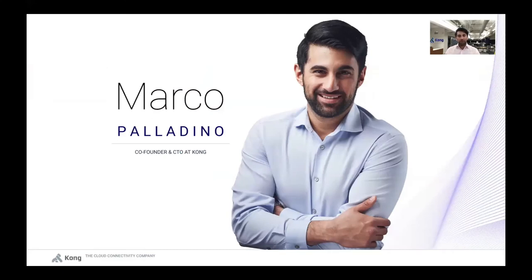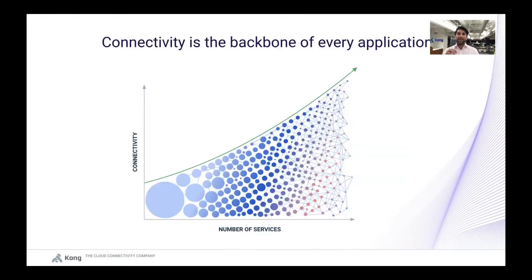Before we look into Kuma, let's ask ourselves why service mesh became such a popular pattern. We have learned many years ago that our monolithic applications, once they grow, become very hard to scale, very hard to deploy in a reliable manner. They are hard to use, hard to deploy, hard to contribute to. Therefore, we're going to be decoupling our monolithic applications into separate services — microservices.